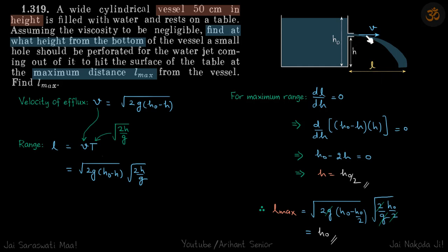So first of all, with what speed the water is coming out, that will be the velocity of efflux and that we know is root 2g height from the top. That will be root 2g(H0 minus H).